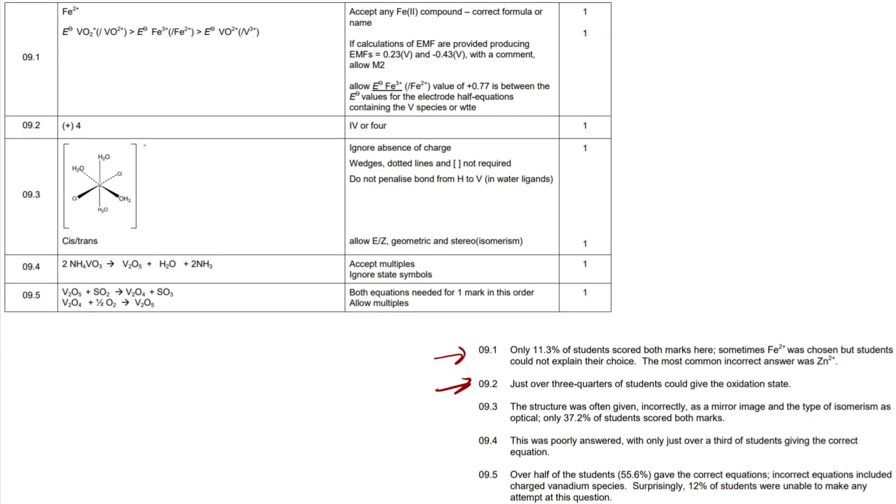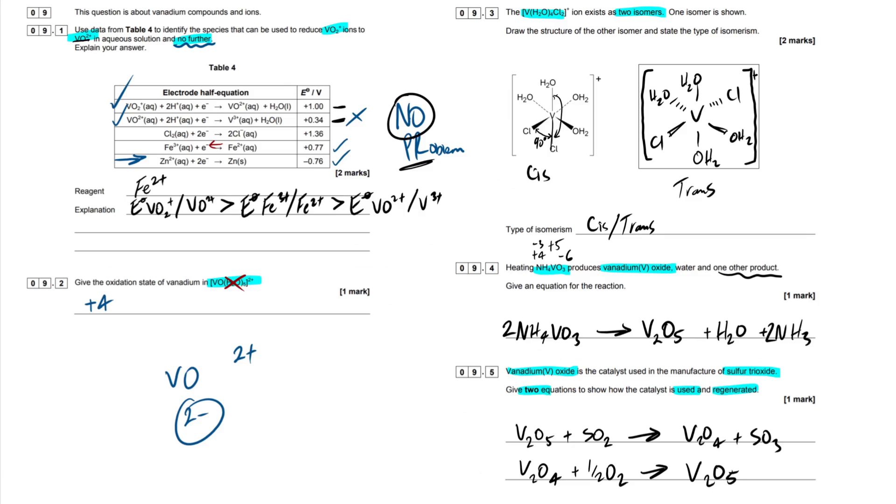Okay, next point then, 9.2. Just over three quarters of students could give the oxidation state. Easy year one, not too much to go over there. 9.3 then. The structure was often given incorrectly as a mirror image and the type of isomerism as optical. Only 37.2% of students scored both marks. So just do your best to remember that optical isomers only form with octahedral complexes that have bidentate ligands. Three bidentate ligands attached. The ones you need to know, ethane dioate and ethane 1,2 diamine. Get those burned into your brain and you'll be good to go.